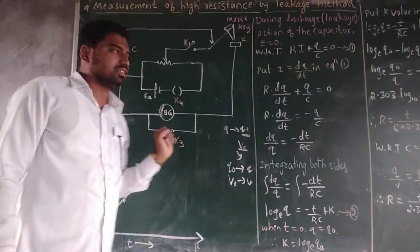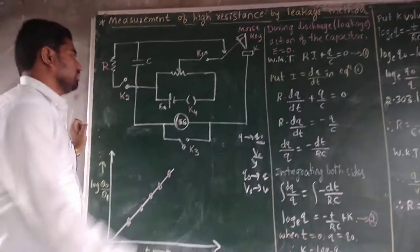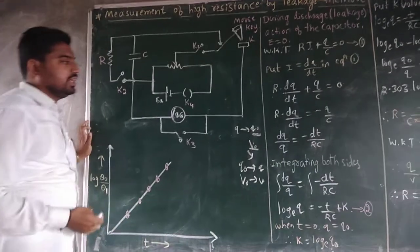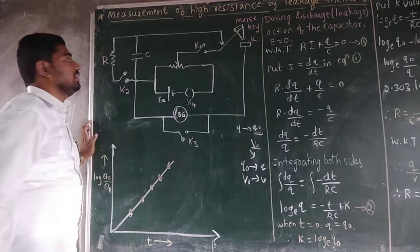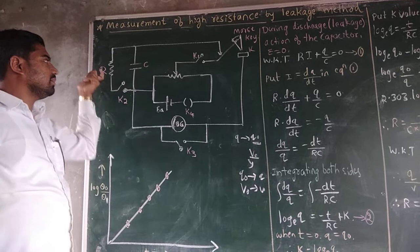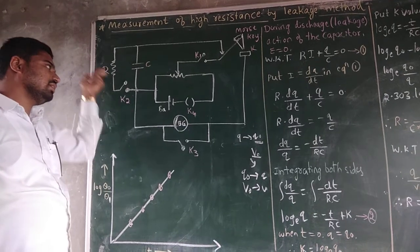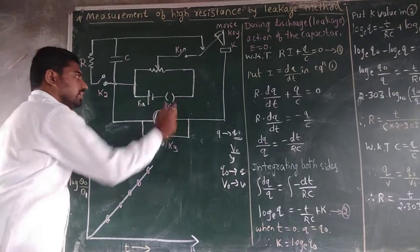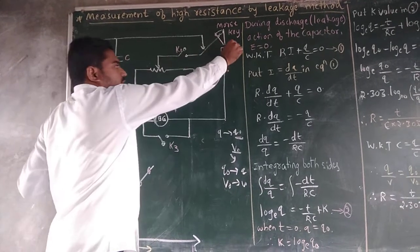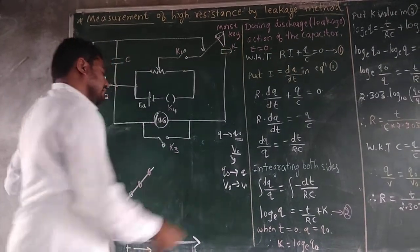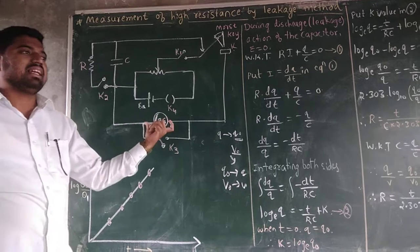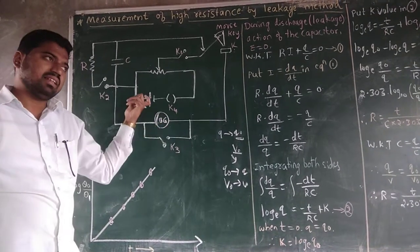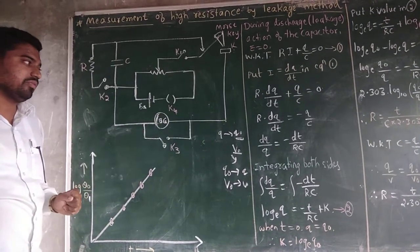Here we have the arrangement for this experiment. We have to use one capacitor, one resistor, and four keys: K1, K2, K3, and K4. We also use one MOS key, that is a tapping key, and a ballistic galvanometer for showing the deflection, and a battery.